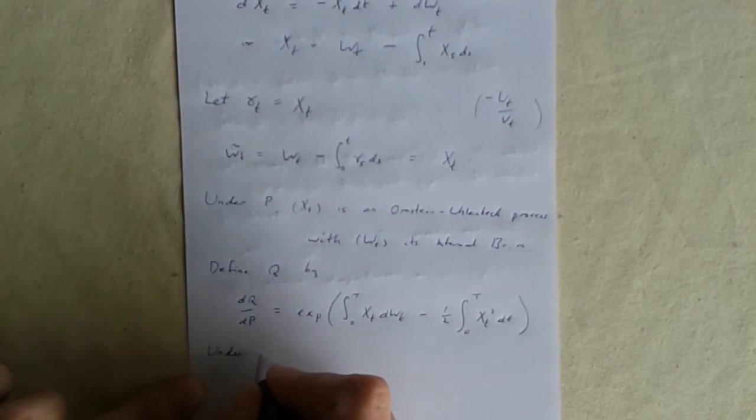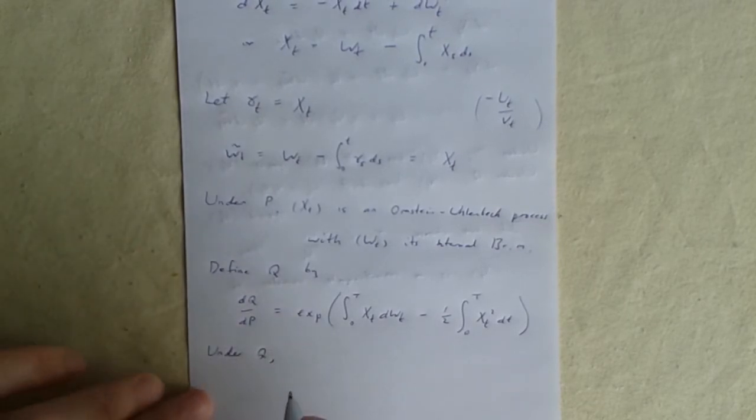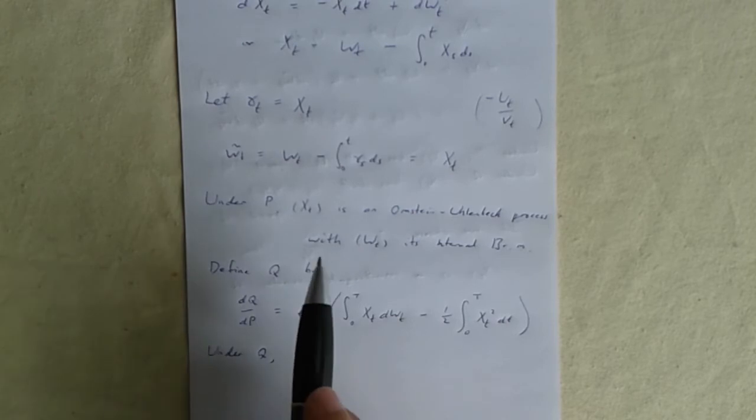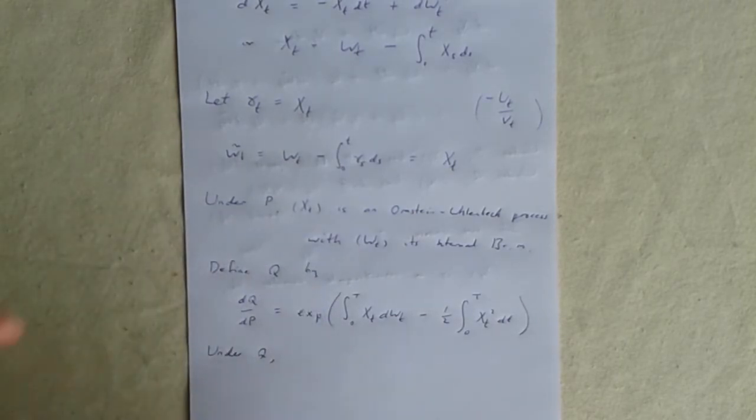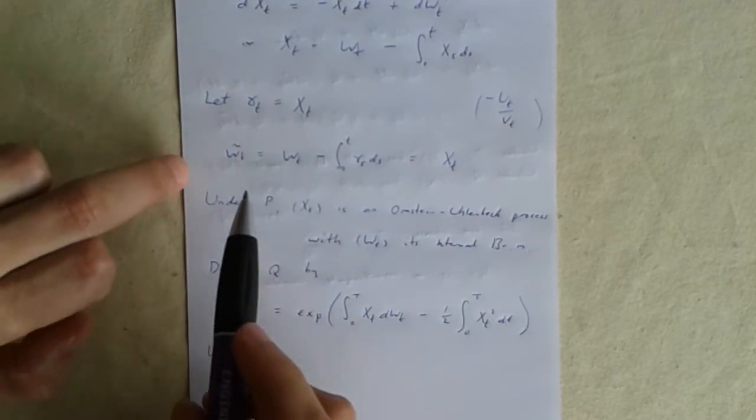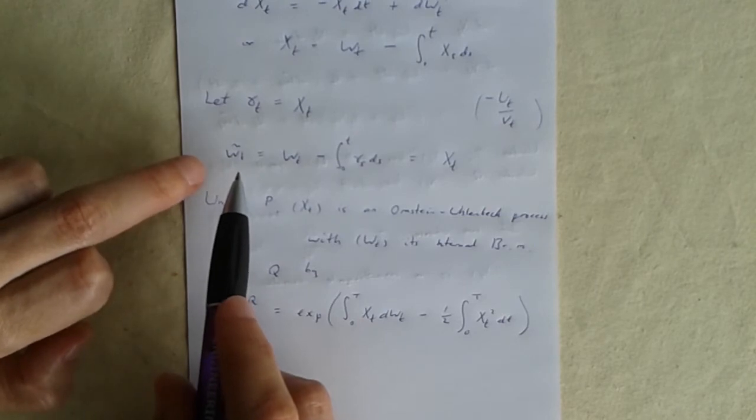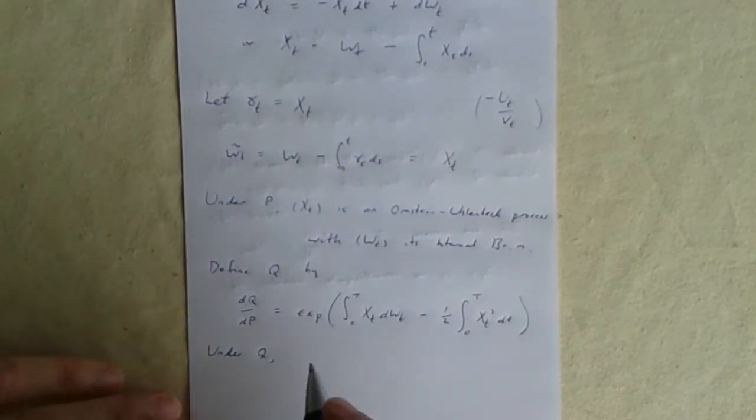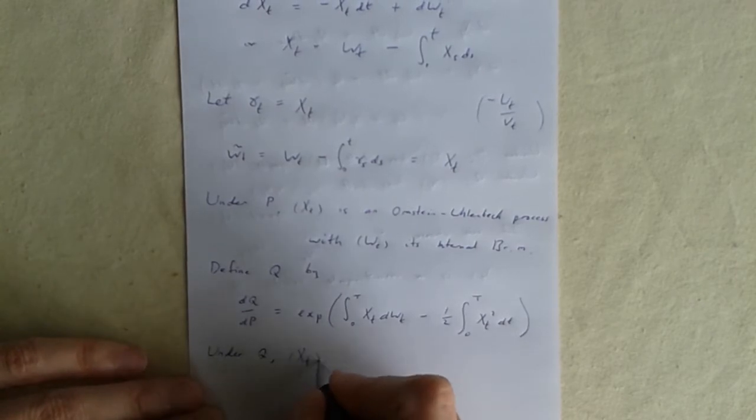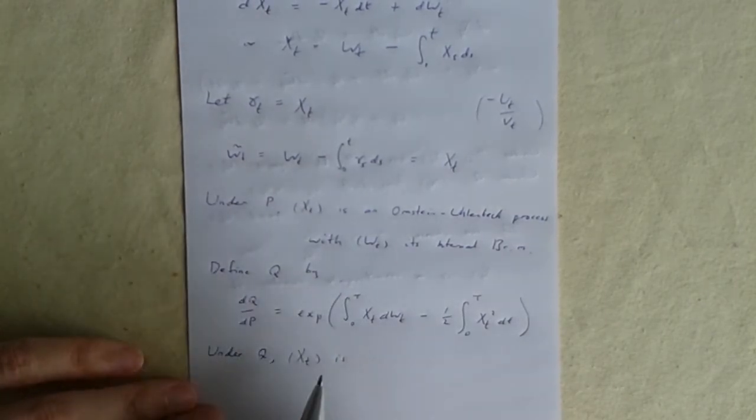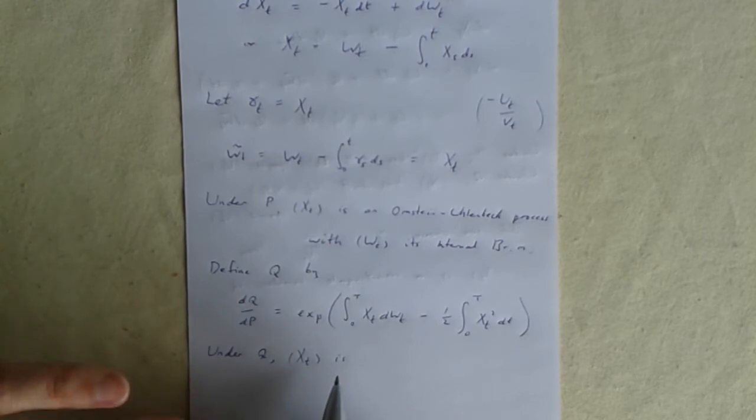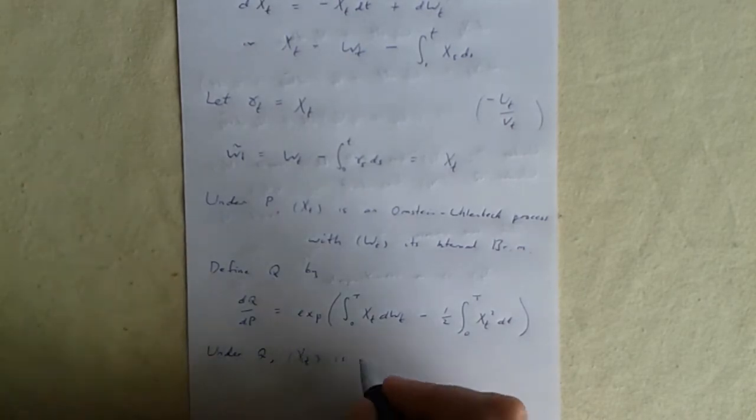And then under Q, what happens to Xt? Well the thing we know about Q is that under Q, Wt tilde becomes a Brownian motion. Since Wt tilde is Xt, we can say that Xt is a Brownian motion. In general it would just be an Ito diffusion martingale but in fact in this example we can say more than that, it is just a Brownian motion.